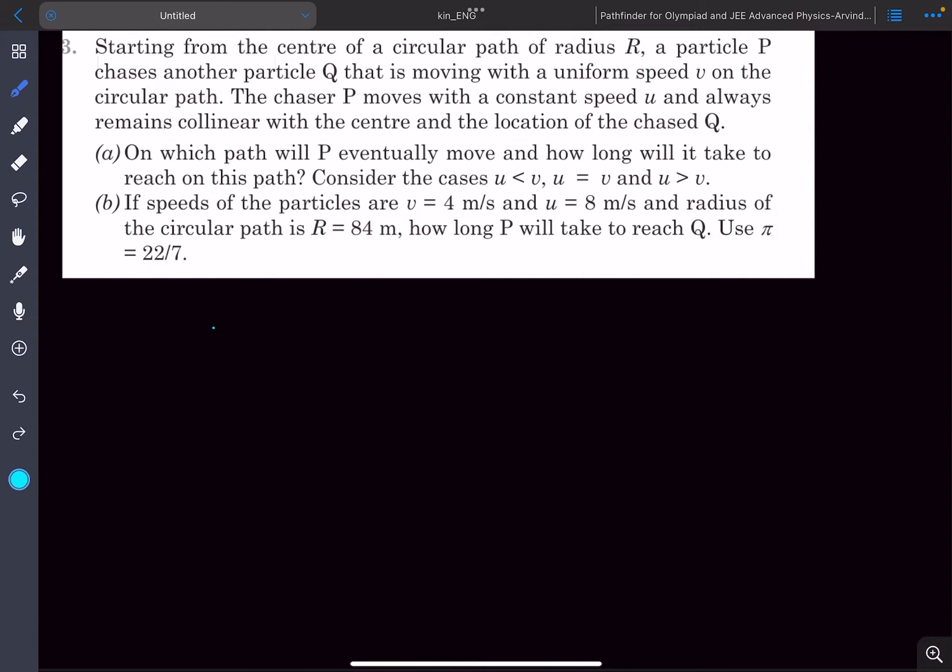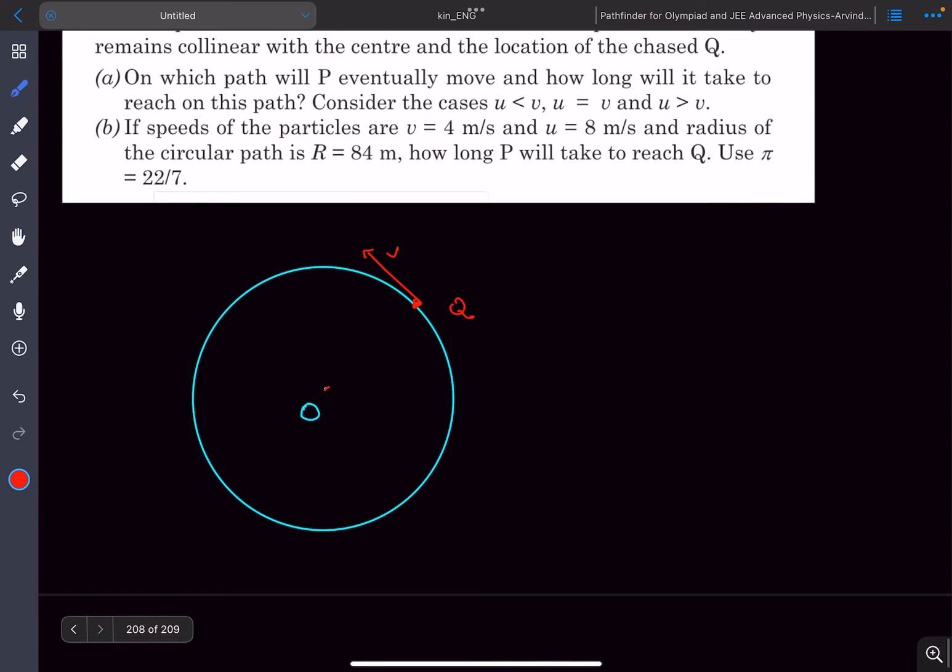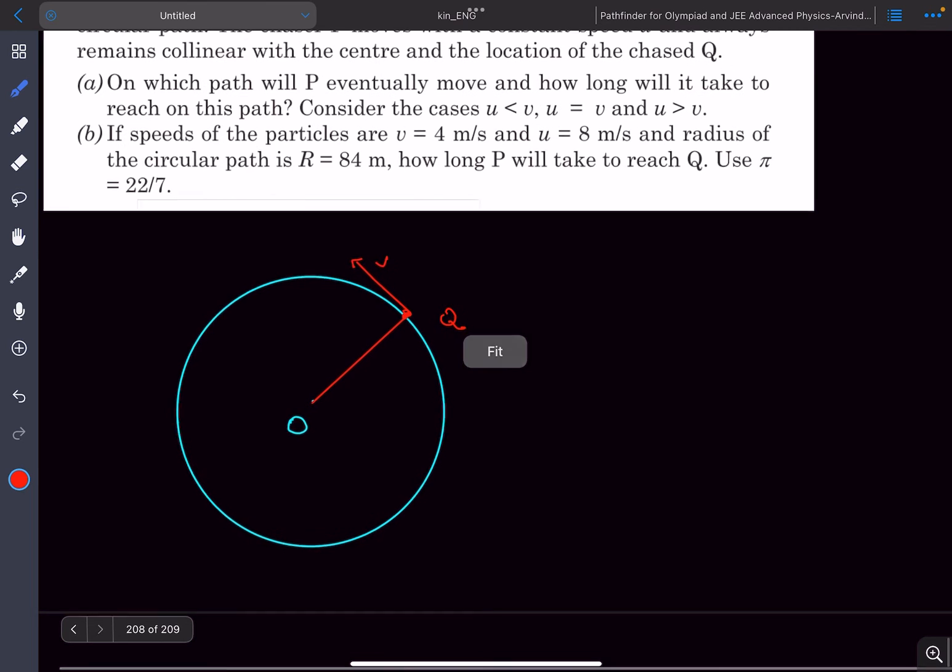So if you try to show it on a diagram, this particle Q is moving on the circular path with speed v which is constant. The particle P that is chasing Q is moving with a constant speed u and it always remains on the same line connecting the center of the circle and the location of Q. So if I try to join these two lines, particle P was initially at O and after some time it is at this point.